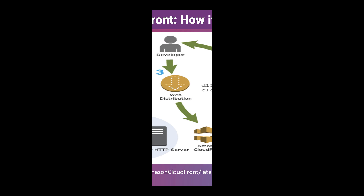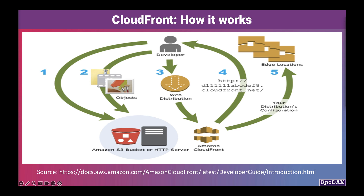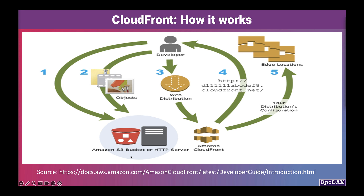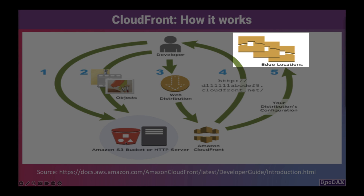Let's see how you configure CloudFront to deliver your content. First, you specify the origin servers. For example, CloudFront gets your content from an Amazon S3 bucket or your own HTTP server. These contents will then be distributed from CloudFront edge locations all over the world.